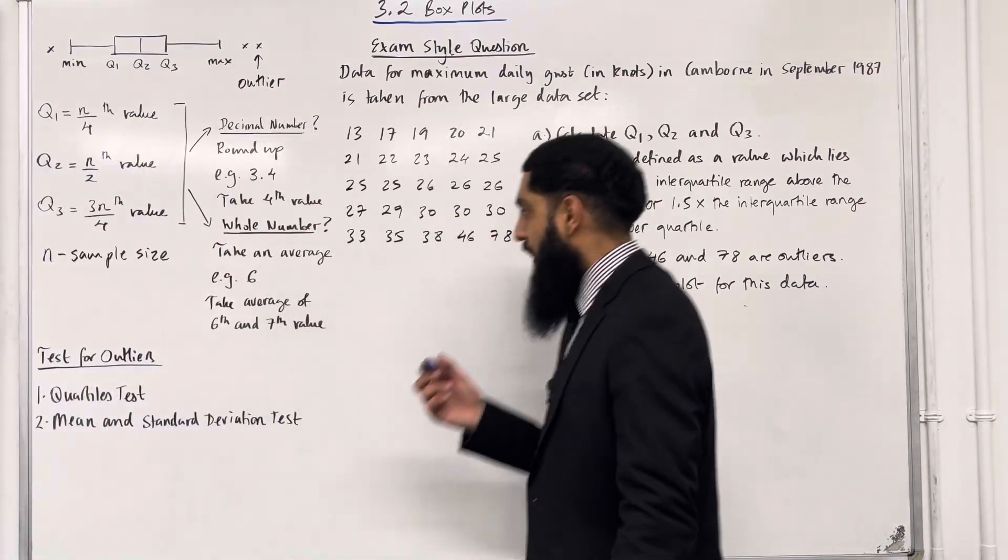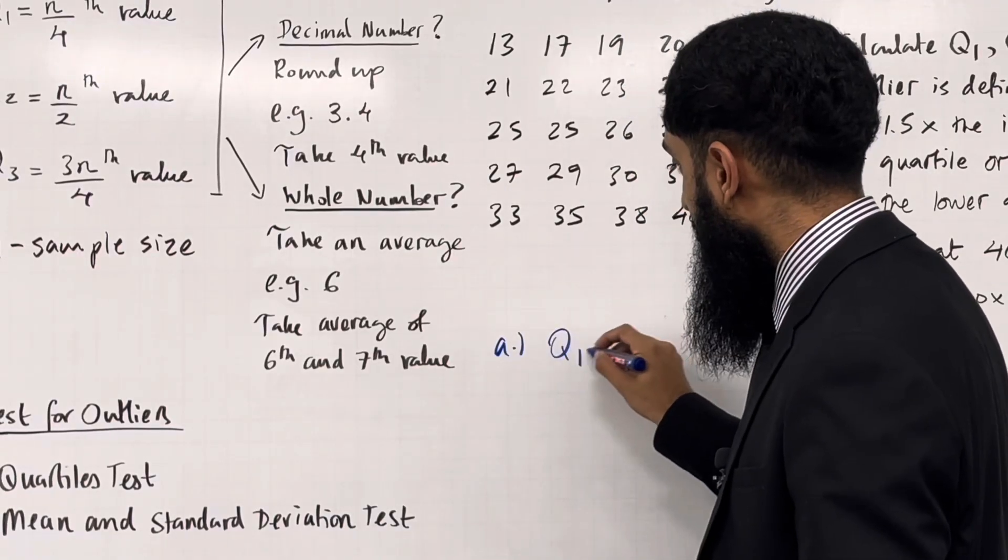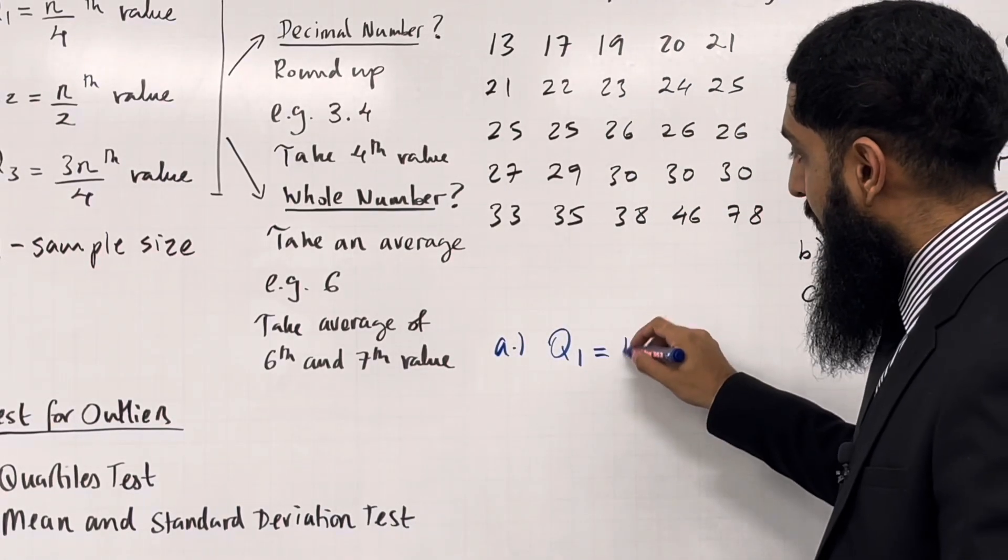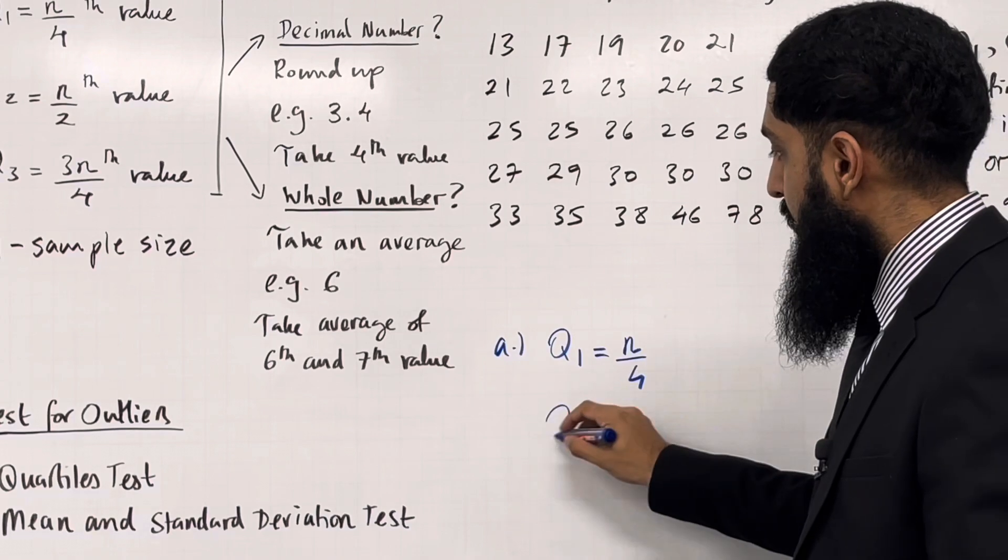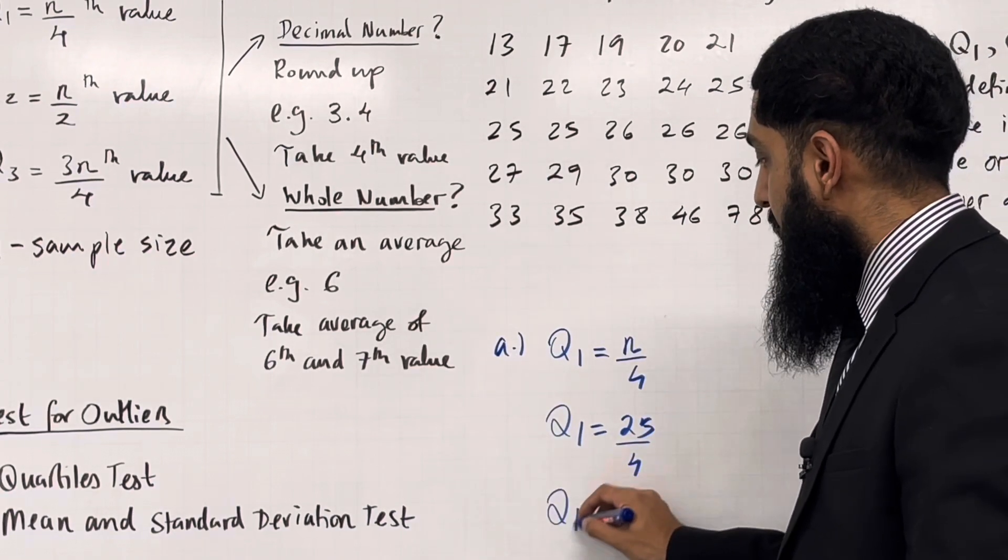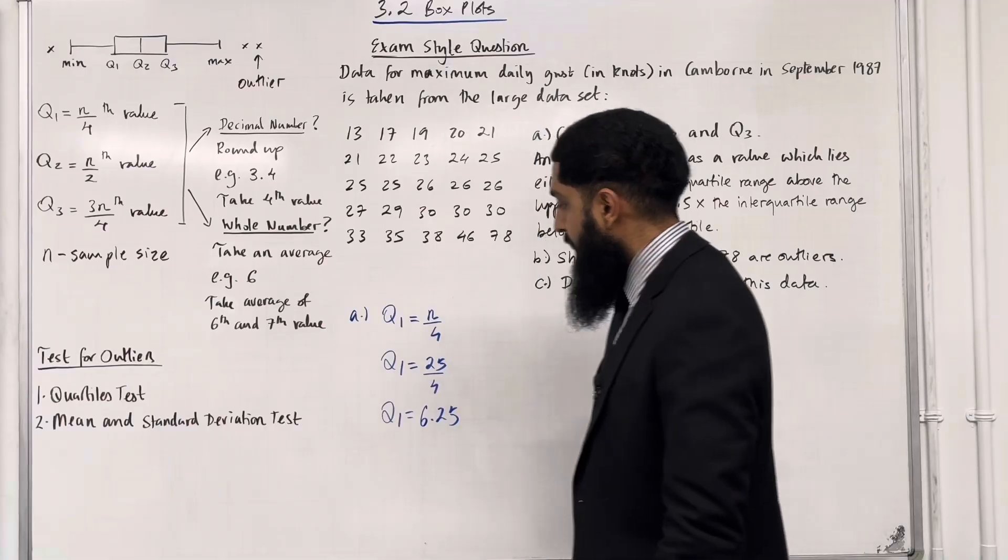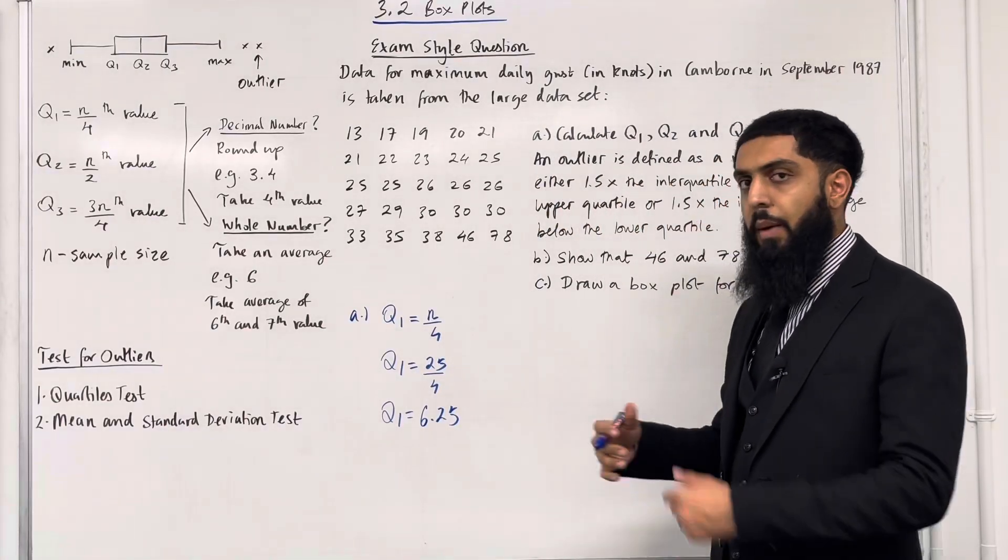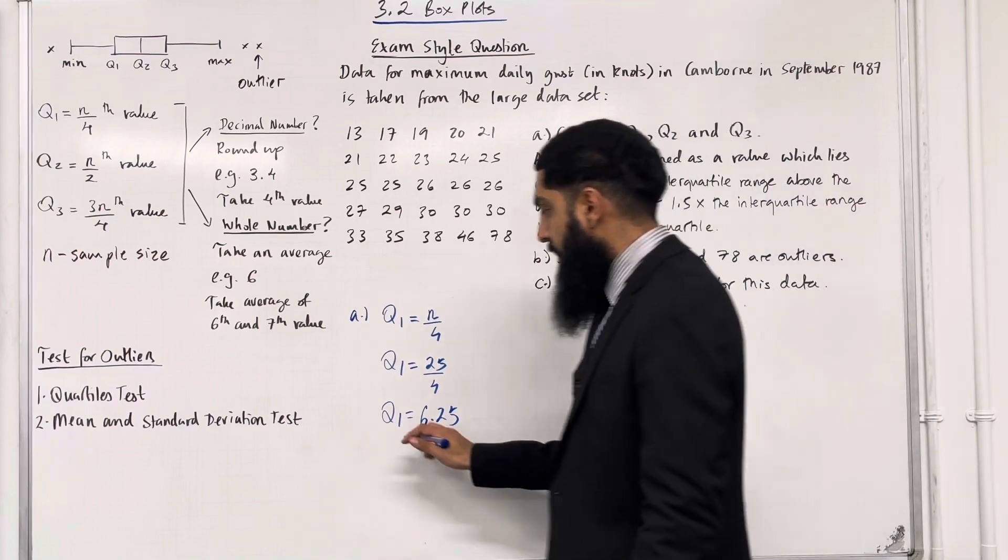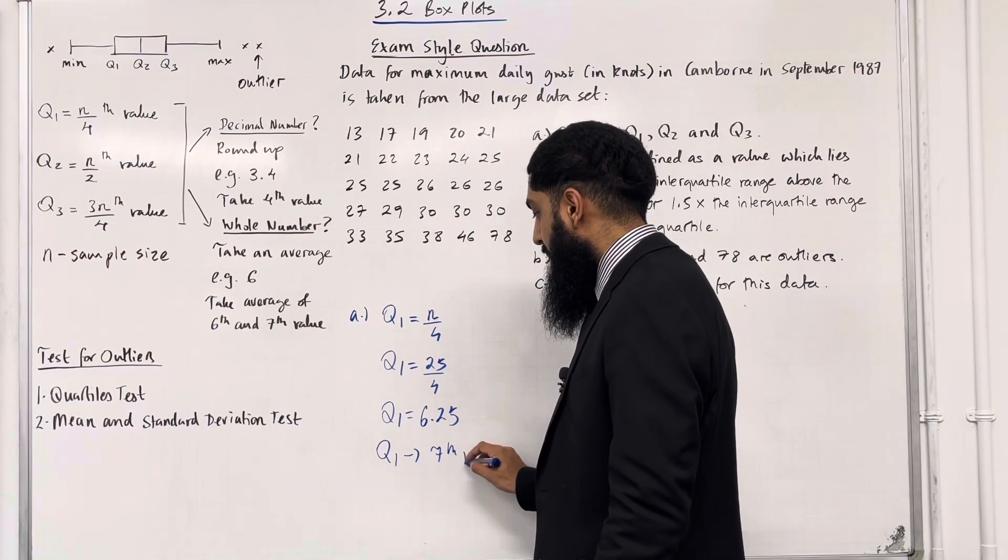Let's have a look at the solution to part A. I'm going to start with Q1. Q1 is given by n over 4, so Q1 equals 25 over 4, which equals 6.25. This is a decimal number, so I must round up. Hence for Q1, I'm taking the 7th value.